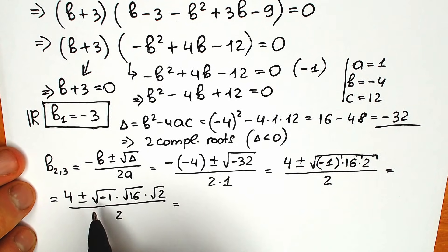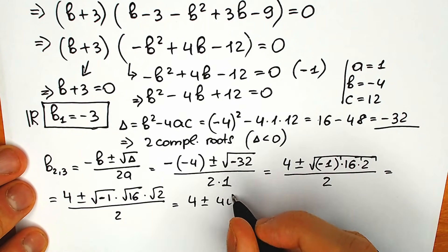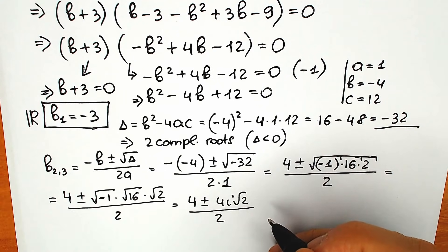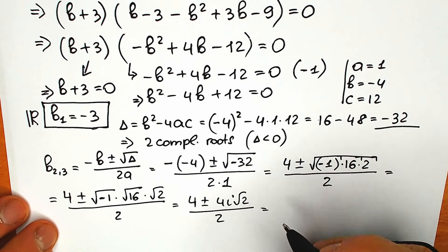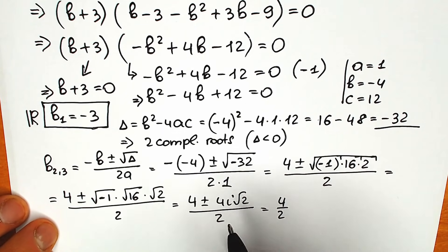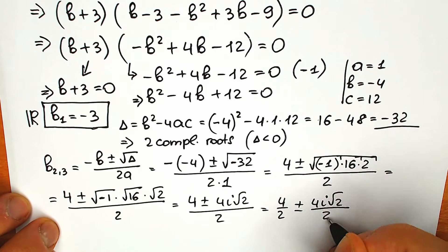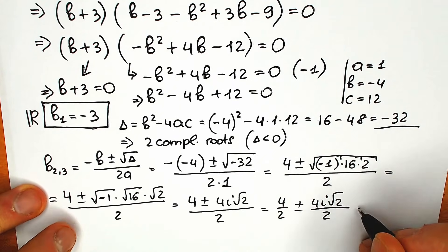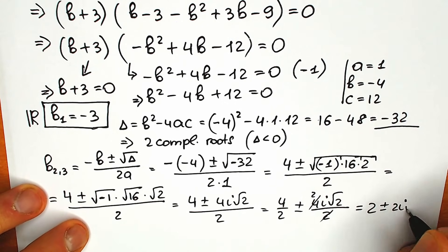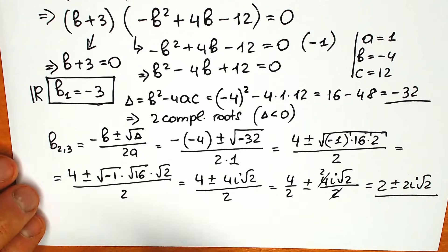Square root of minus 1 equals i, square root of 16 equals 4, and square root of 2 we leave as is. So we have (4 plus or minus 4i√2) over 2. We can divide the numerator by parts: 4 over 2 equals 2, and 4i√2 over 2 equals 2i√2. So our two complex roots are b₂,₃ equals 2 plus or minus 2i√2.